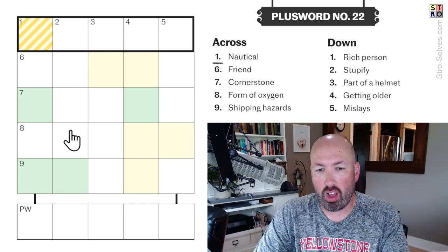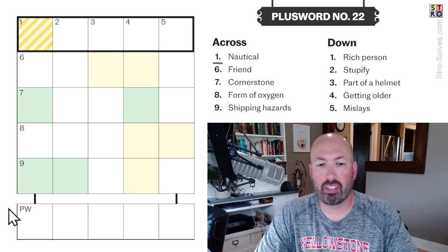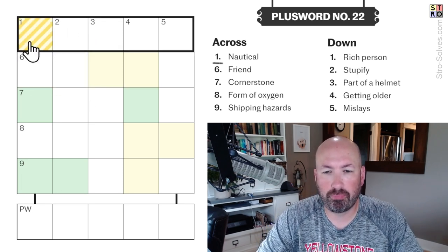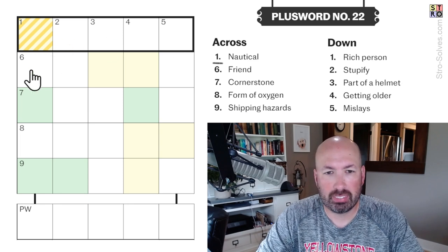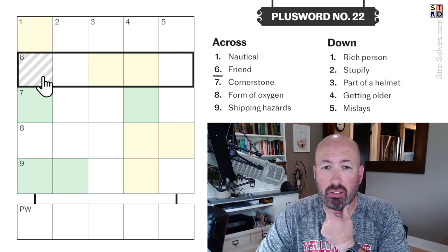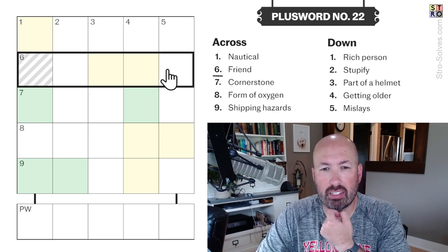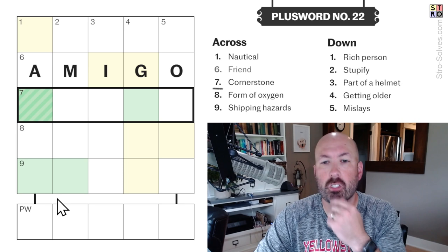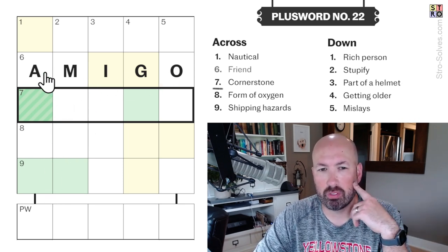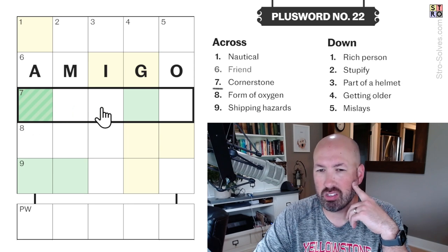It's like a normal crossword, basically a small crossword with an extra Wordle thing at the end. So nautical, nautical, I don't know. Maybe something like at sea. Could be friend, could be something like amigo. It's not English, but it's more like a loan word. I think we'll put that in there for now. We'll see. Cornerstone.